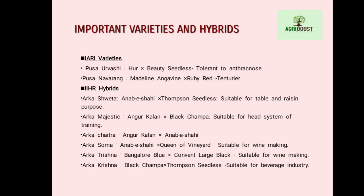Arka Shweta is a cross between Anab-e-Shahi and Thompson Seedless, suitable for table and raisin purpose. Arka Majestic is a cross between Angar Kalan and Black Champa, suitable for the head system of training. Arka Chaitra is a cross between Angar Kalan and Anab-e-Shahi. Arka Soma is a cross between Anab-e-Shahi and Queen of Vineyard, suitable for wine making. Arka Krishna is a cross between Bangalore Blue and Convent Large Black, suitable for wine making. Arka Trishna is a cross between Black Champa and Thompson Seedless, suitable for the beverage industry.